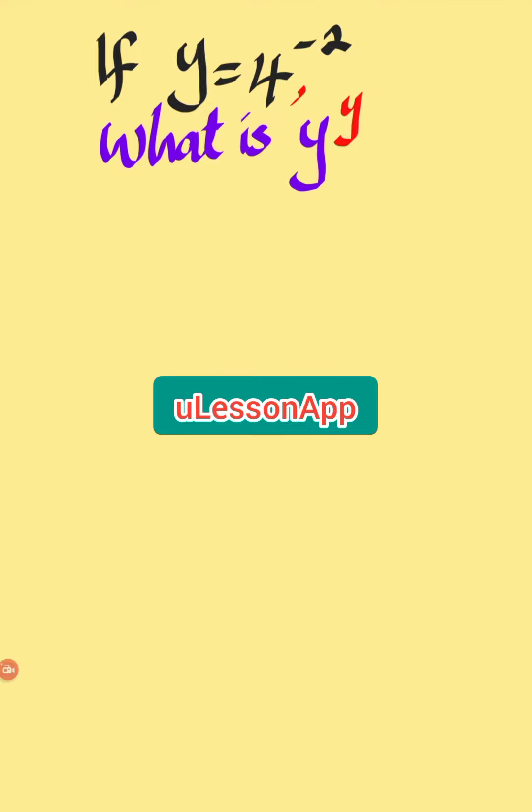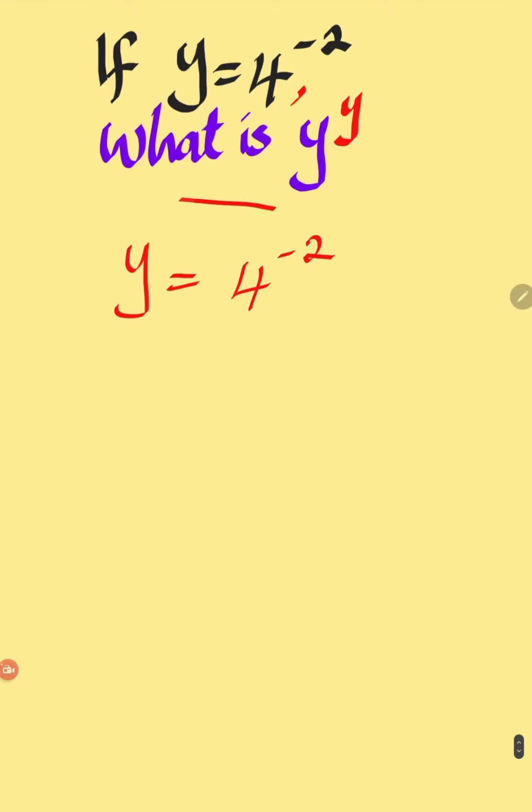So we have, if y is equal to 4 to the power of minus 2, what then is the value of y to the power of y? So we know that y equals 4 to the power of minus 2. Let us keep it aside.